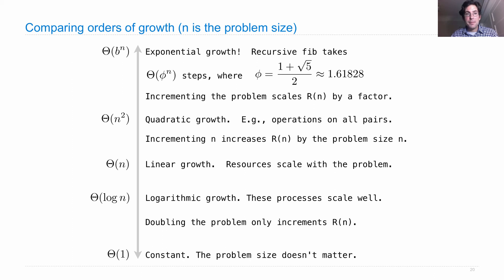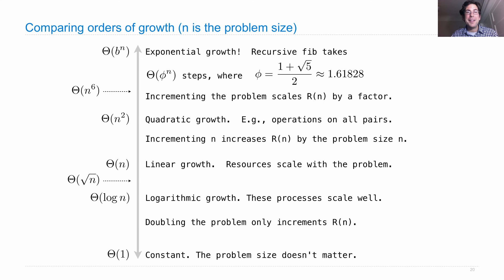There are other options. You could have n to the sixth, which takes much longer than n squared, so it doesn't scale as well, but still scales much better than exponential growth. You could have square root of n, which is somewhere in between linear growth and logarithmic growth. But the ones you really need to worry about are linear, logarithmic, constant, and exponential. Understanding quadratic growth is important, too.